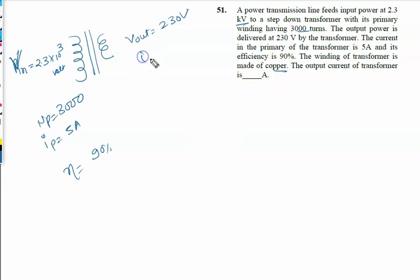Output current we have to write, I in the secondary. Now, efficiency is given by the output power upon input power. Power is V into I, that is output V into I divided by input.